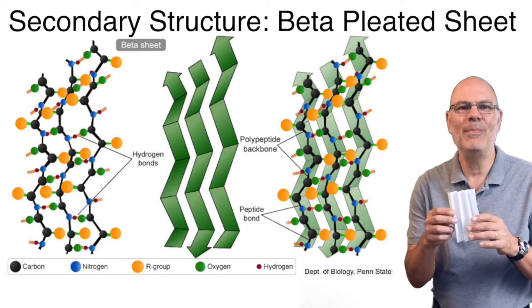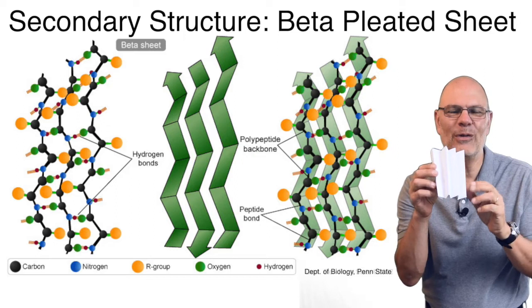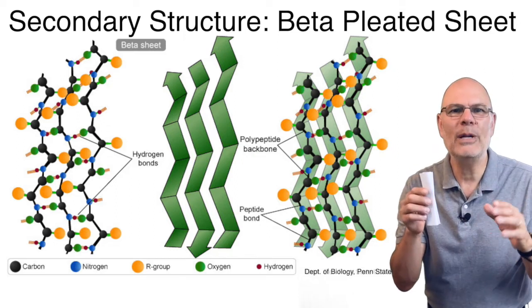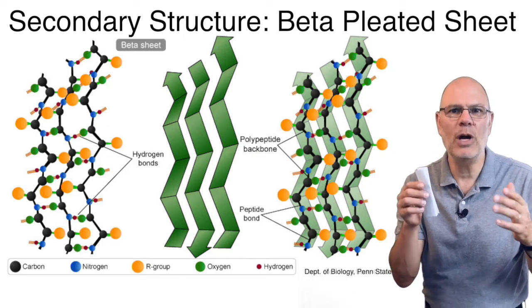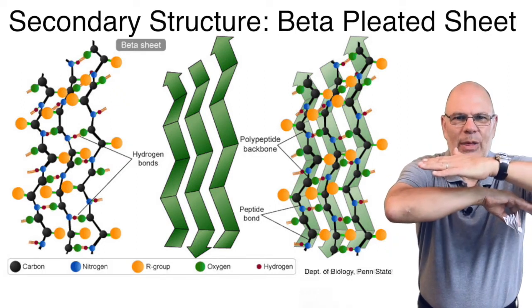The other form is called a beta pleated sheet. A pleat is this. It's a series of regular folds. This happens when parts of a polypeptide chain run parallel to one another, like this, or anti-parallel, like this.